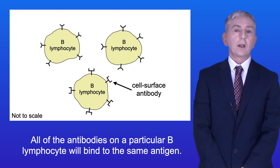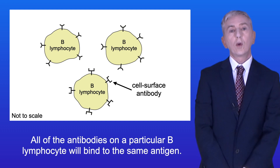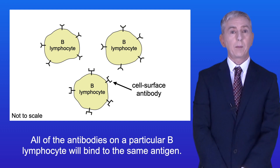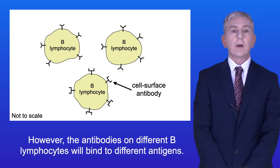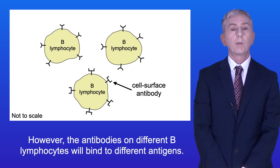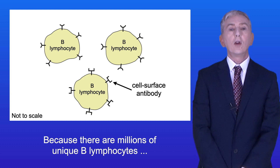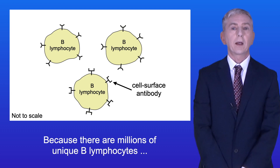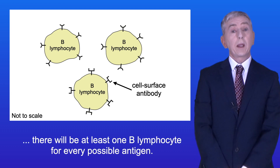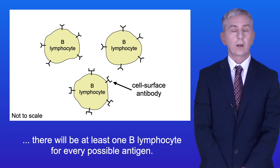All of the antibodies on a particular B lymphocyte will bind to the same antigen. However, the antibodies on different B lymphocytes will bind to different antigens. And because there are millions of unique B lymphocytes, there will be at least one B lymphocyte for every possible antigen.